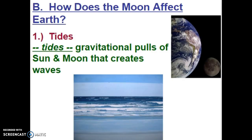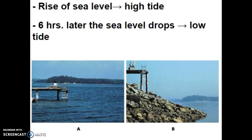Because the Moon is our closest neighbor in space, it does have some effects here on Earth. The tides are gravitational pulls of both the Sun and the Moon that create waves in the ocean in a very timed manner. We have the rise of the sea level — we call that high tide — and approximately six hours later, the sea level will drop in a low tide.